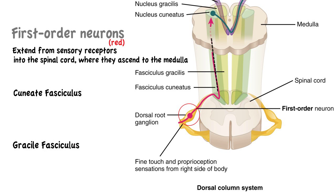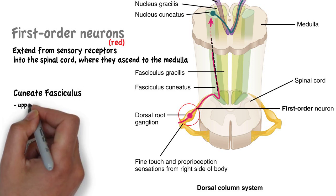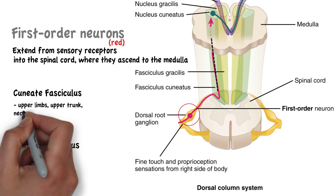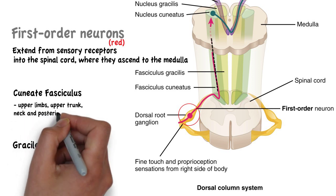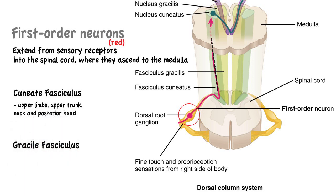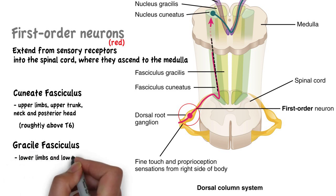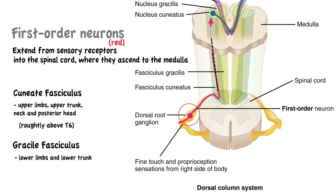Nerve impulses from the upper limbs, upper trunk, neck and posterior head propagate along the axons in the cuneate fasciculus, while nerve impulses from the lower limbs and lower trunk propagate along the gracile fasciculus.